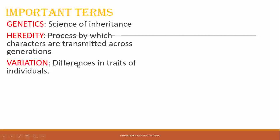Variation means differences in traits of an individual. You can observe this in your own family — siblings from the same parents differ in their appearance, how they look, and even in their behavior. These differences are known as variation, and variation is created during the process of cell division.